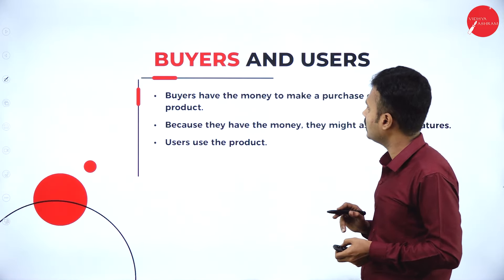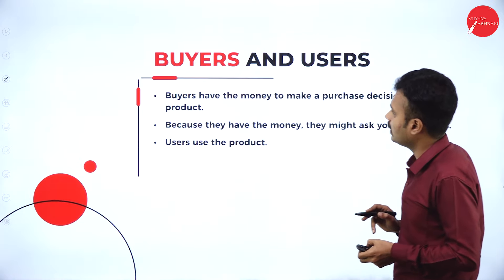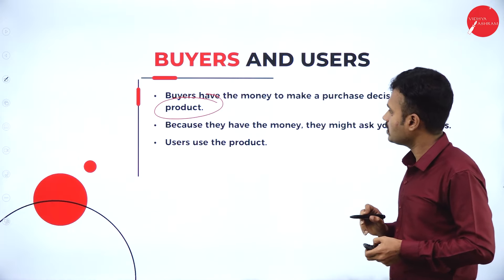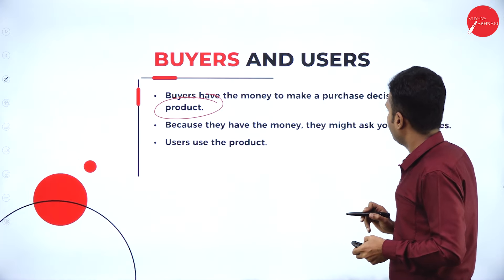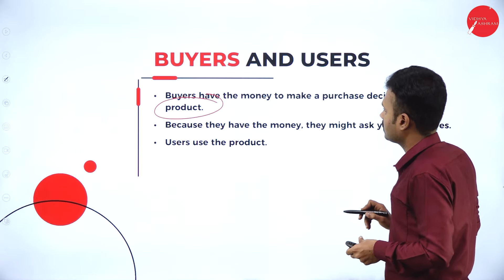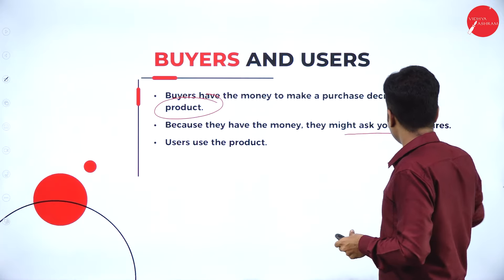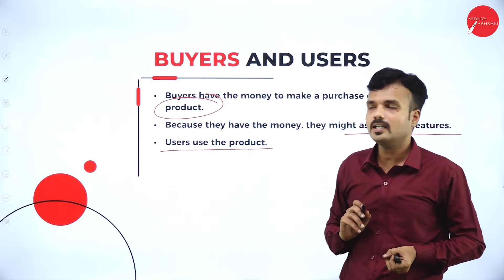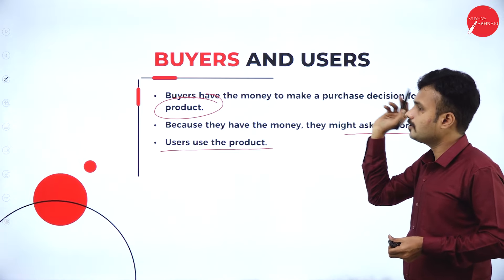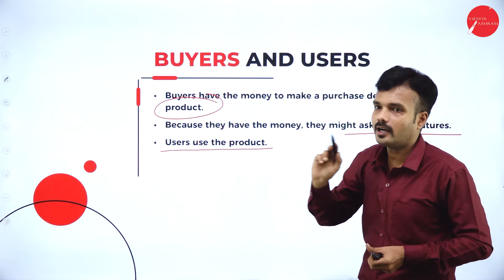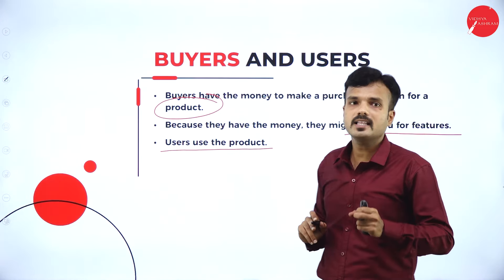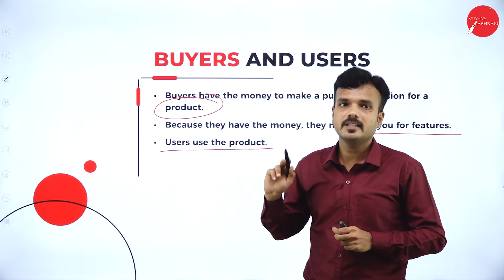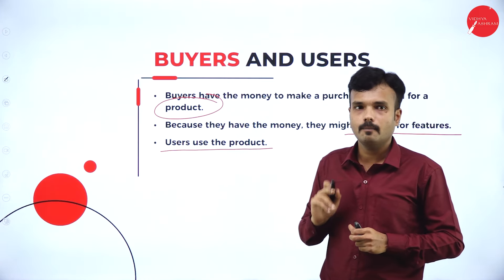Buyers and users: buyers have the money to make a purchase decision and purchase the product based on its features or characteristics. Users are the consumers of the product. Buyers and users may be the same person or different persons. For example, if a father purchases a chocolate and offers it to his daughter, the daughter is the consumer and the father is the buyer.